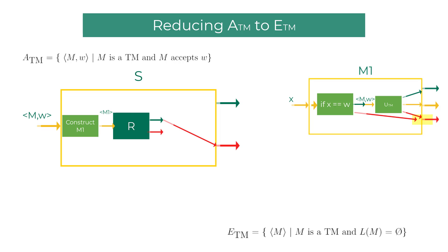Hence, if M1's language is non-empty, it has to be W, which is simulated on machine M ending up in the accept state. We can confidently say M accepts W when ETM decider R rejects M1.